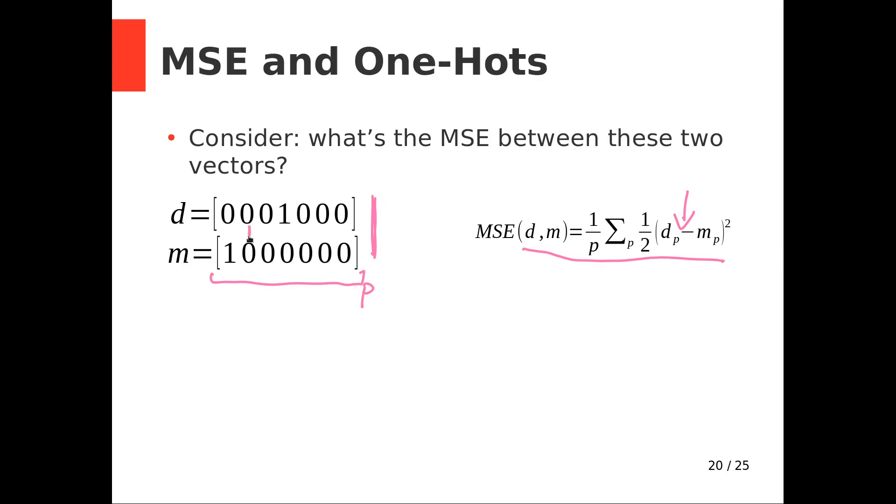Most of these are going to be zero, because zero minus zero is zero. So one half of zero minus zero squared is zero. In fact, because these are one-hots, only two of these are non-zero.